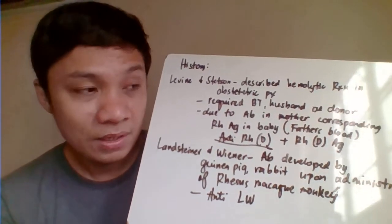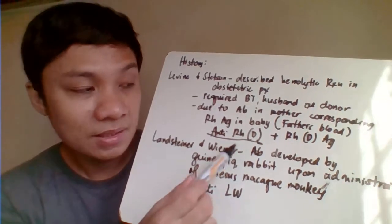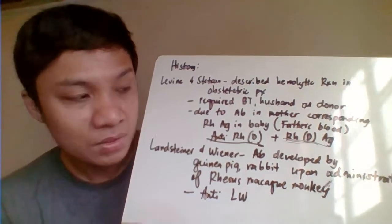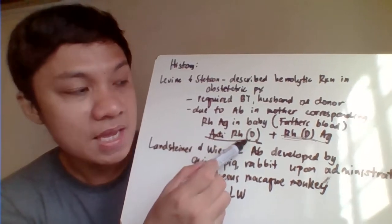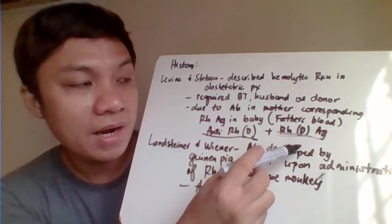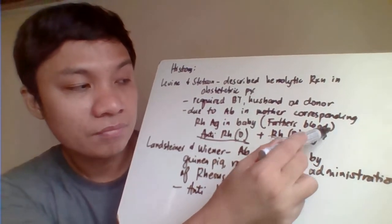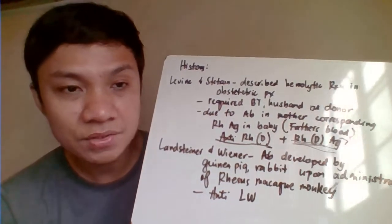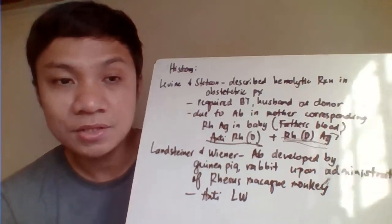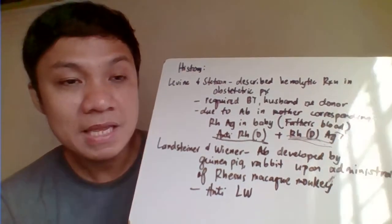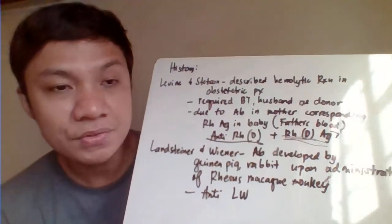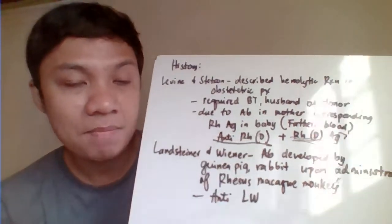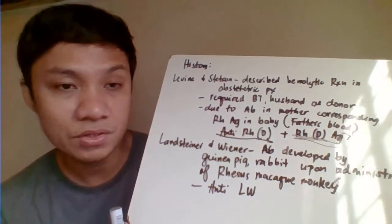The hemolytic transfusion reaction occurred because the mother had developed anti-RHD antibody directed toward the RHD-positive antigen on the baby. The baby had assumed the RHD antigen status of the father, who was D positive. Therefore the baby was also D positive, and since the mother had developed anti-D antibody, a hemolytic transfusion reaction occurred.